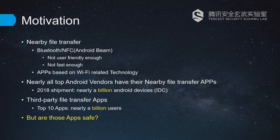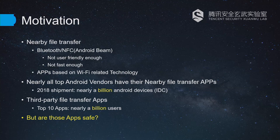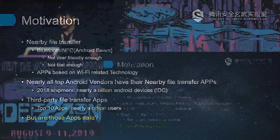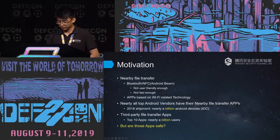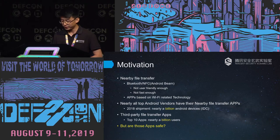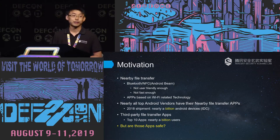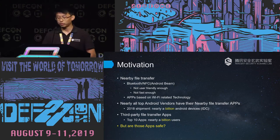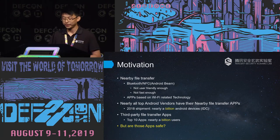Nearby transfer apps based on Wi-Fi related technology are people's new choice. Based on our research, we found that nearly all top smartphone vendors have their own sharing apps. Based on IDC data, the shipment last year was nearly a billion phones — a billion within a single year. That's a big number. If they are vulnerable, a huge number of people will be affected. So we began our research.